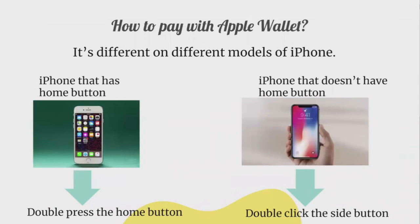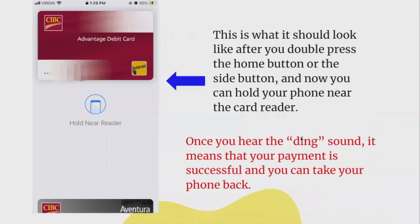How to pay with Apple Wallet varies by iPhone model. For iPhones with a home button, double-press the home button. For iPhones without a home button, double-click the side power button. After doing so, you'll see your wallet screen. Hold your phone near the card reader, and you should hear a ding sound indicating that your payment was successful, and you can take your phone back.